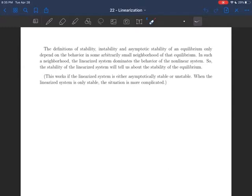As I said before, the definitions of stability, instability, asymptotic stability of an equilibrium, they only depend on the neighborhood, the behavior of the system in some small, arbitrarily small neighborhood of the equilibrium. And in that neighborhood, the linearized system dominates the behavior of the nonlinear system. So, the stability of the linearized system is the same as the stability of the equilibrium in the big system that's nonlinear. So we can tell stability just by looking at the linear approximation. That is a great step forward, because we get to convert hard problems into easier problems.